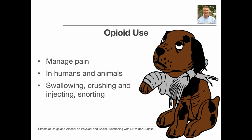The medical use of opioids is to provide pain relief. Prescription drugs like oxycodone, hydrocodone, codeine, morphine, and fentanyl are used to manage pain in humans and in animals by swallowing or crushing and injecting or snorting.